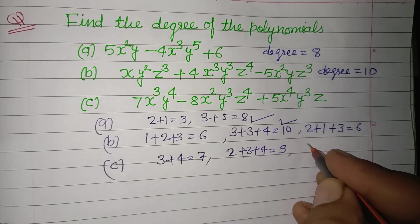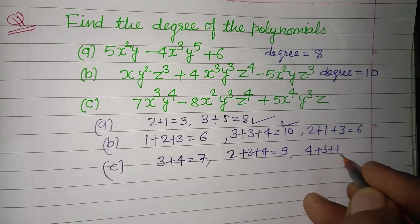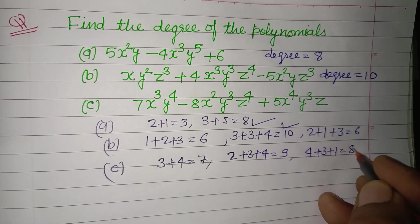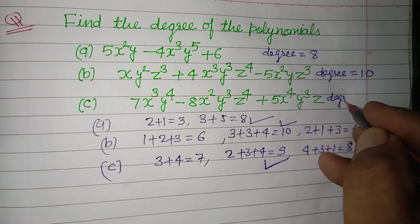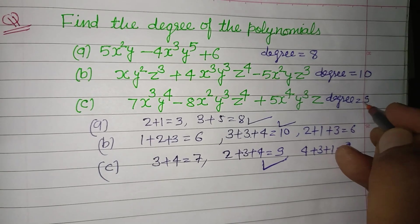And fourth term powers are 4 plus 3 plus 1. So this is 8. So greatest power is 8. Therefore degree of this polynomial is 9.